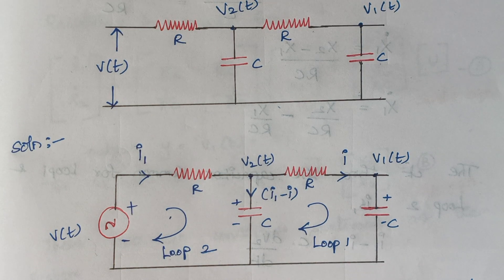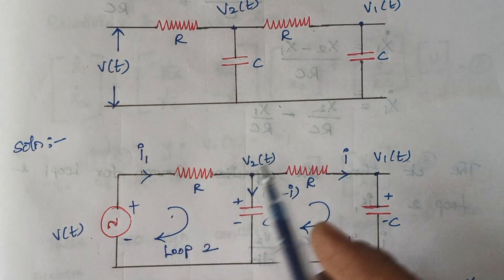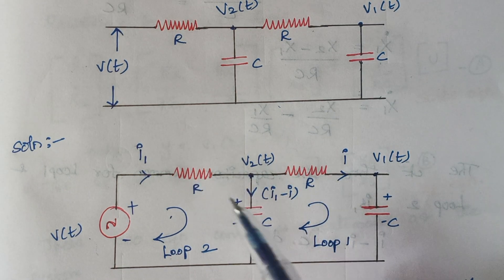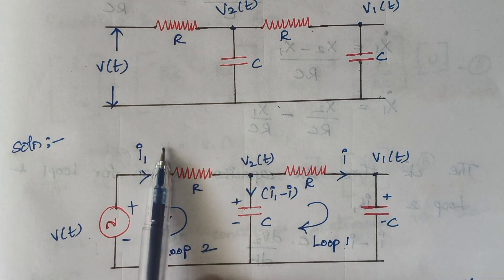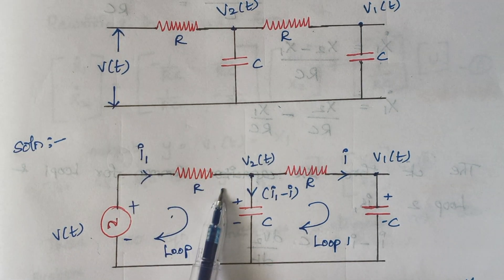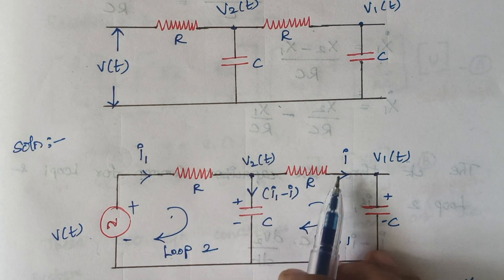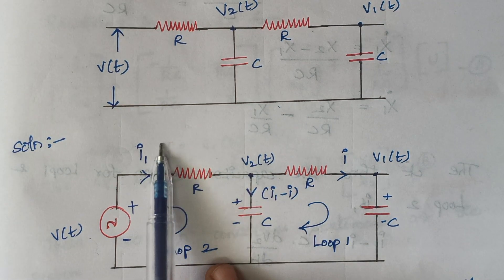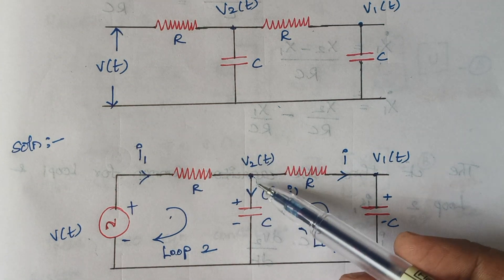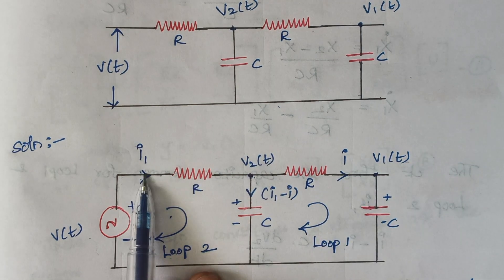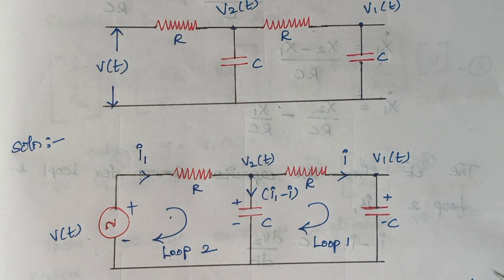Before proceeding, we assume the currents ourselves. Let i1 be the current flowing through the resistor R. At the node, i1 gets divided into i and i1 minus i. For example, if 5 amps flows through the resistance and 2 amps is i, then 5 minus 2 equals 3 amps flows through the capacitor. That is why the current flowing through the capacitor is i1 minus i.